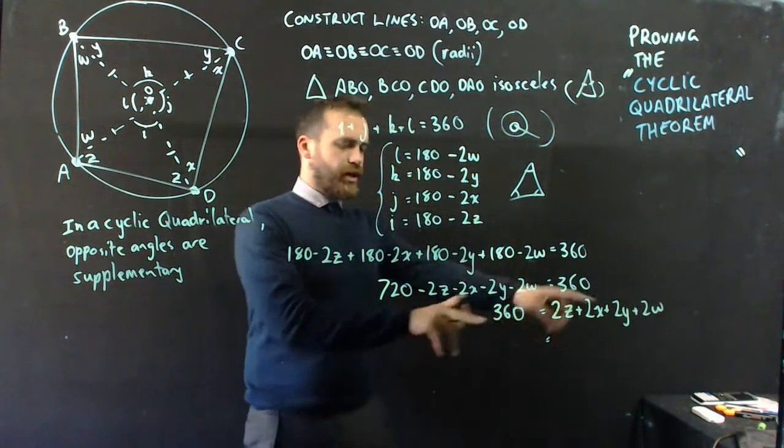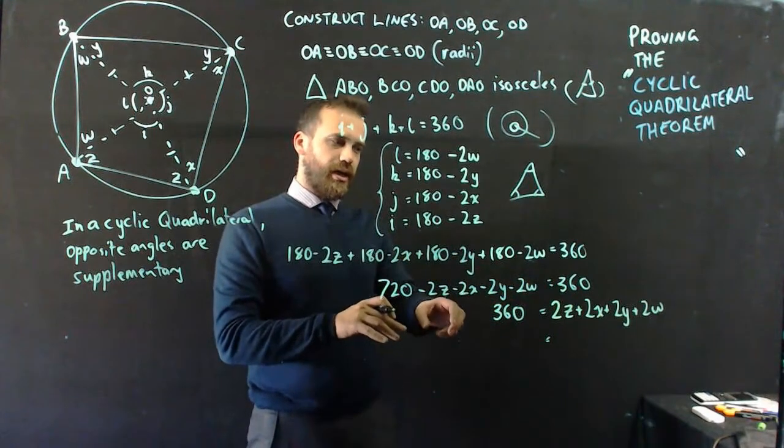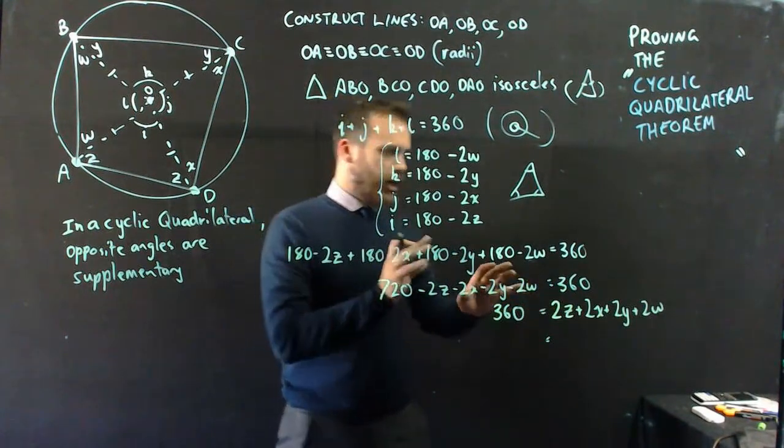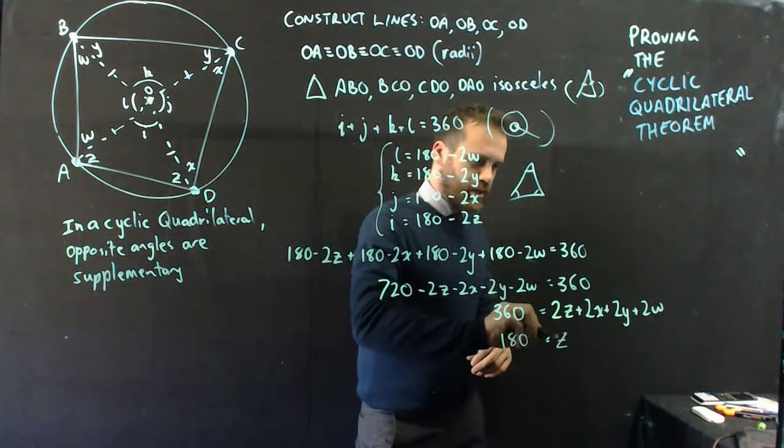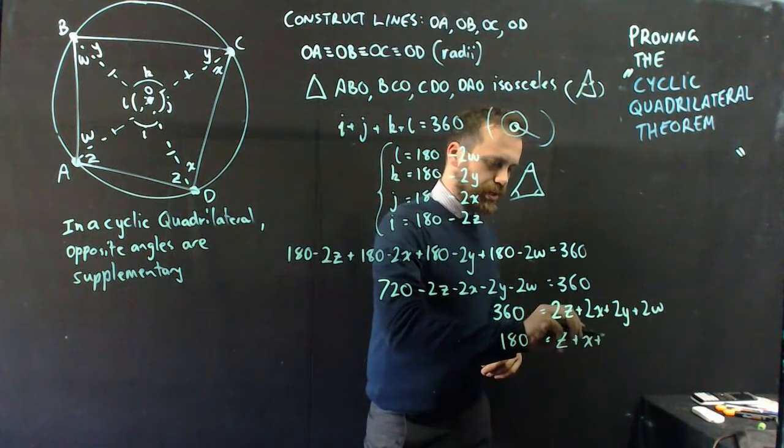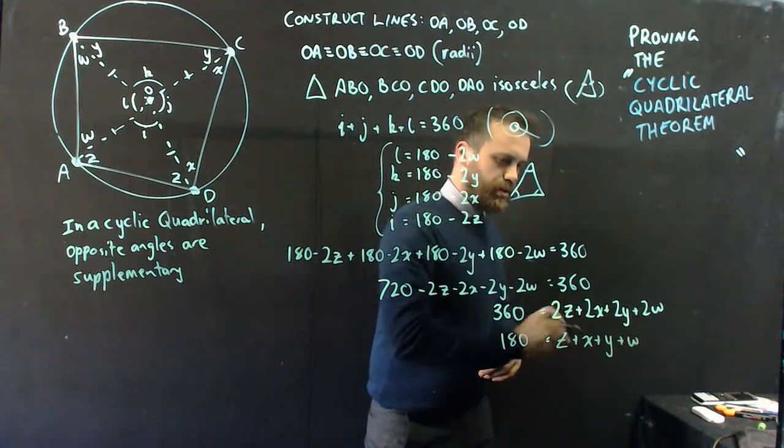Now, I could factorize that, bring 2 on the outside, and then divide by 2, divide both sides by 2. And what I'll get is 180 equals Z plus X plus Y plus W.